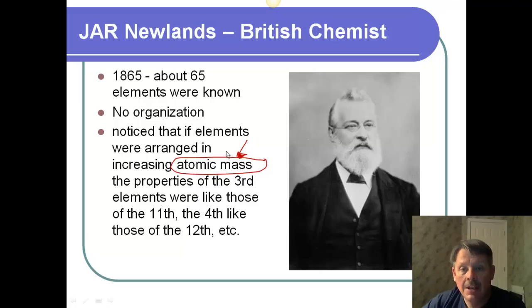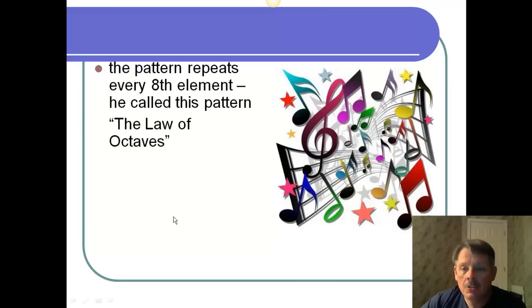So, he noticed that if they arranged the elements in average atomic mass, that the properties of the third elements were like those of the 11th, and the fourth like the 12th. In other words, you'll notice they're separated by eight every time. And that's what he noticed. Notice we're in 1865. So, he called this the law of octaves. Why octaves? Well, because musical notes, when you go up an octave, you'll go from an A to an A, or a B to a B. So, the pattern repeats every eighth element. So, he called it the law of octaves.